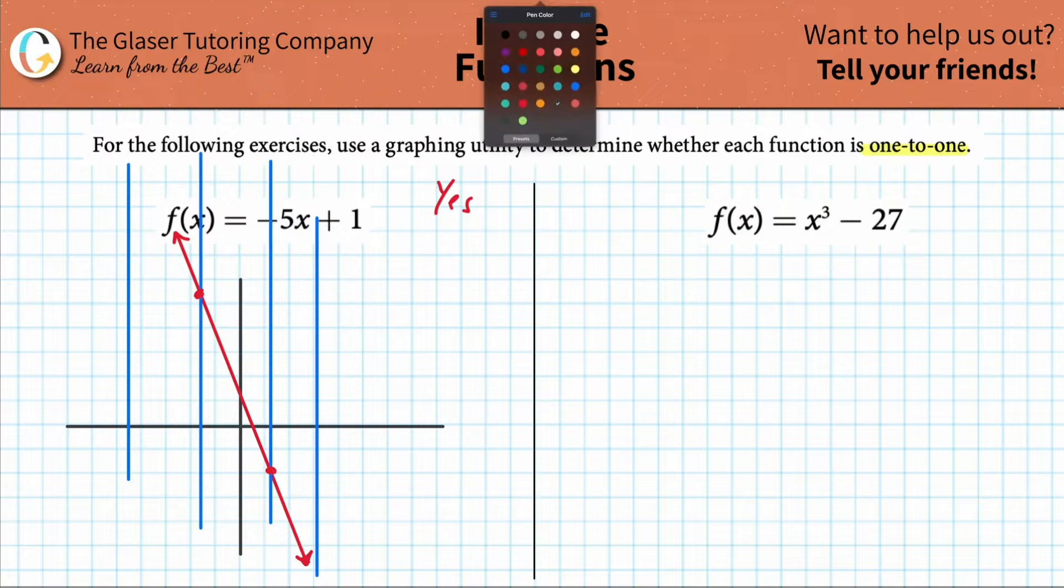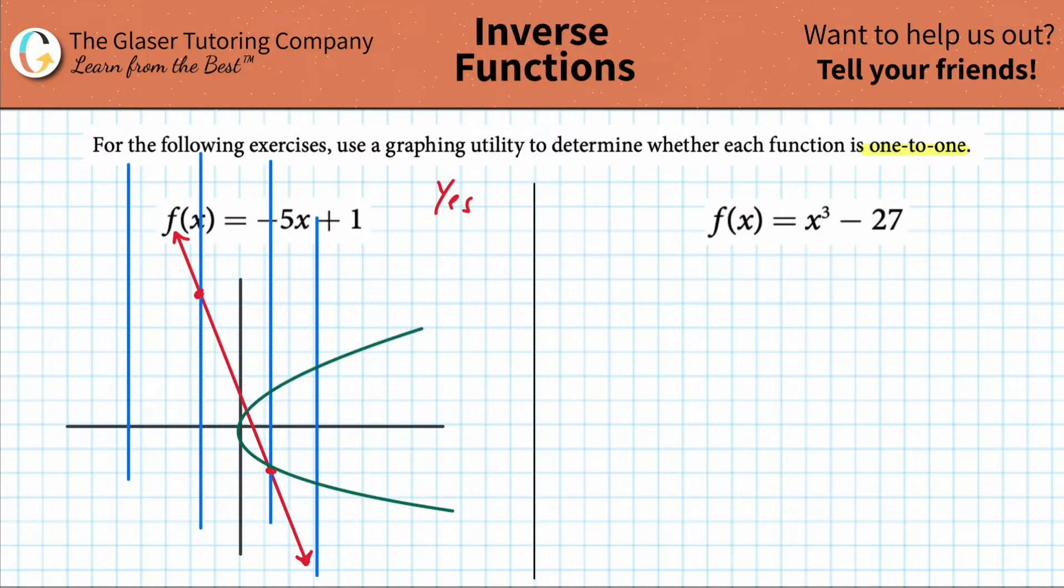Imagine I had a different function, let's change the color here a little bit, imagine I had a function that kind of looked like this. And now when I drew all those vertical lines, those vertical lines, take a look over here, those vertical lines intersect now, this one vertical line intersects two spots.